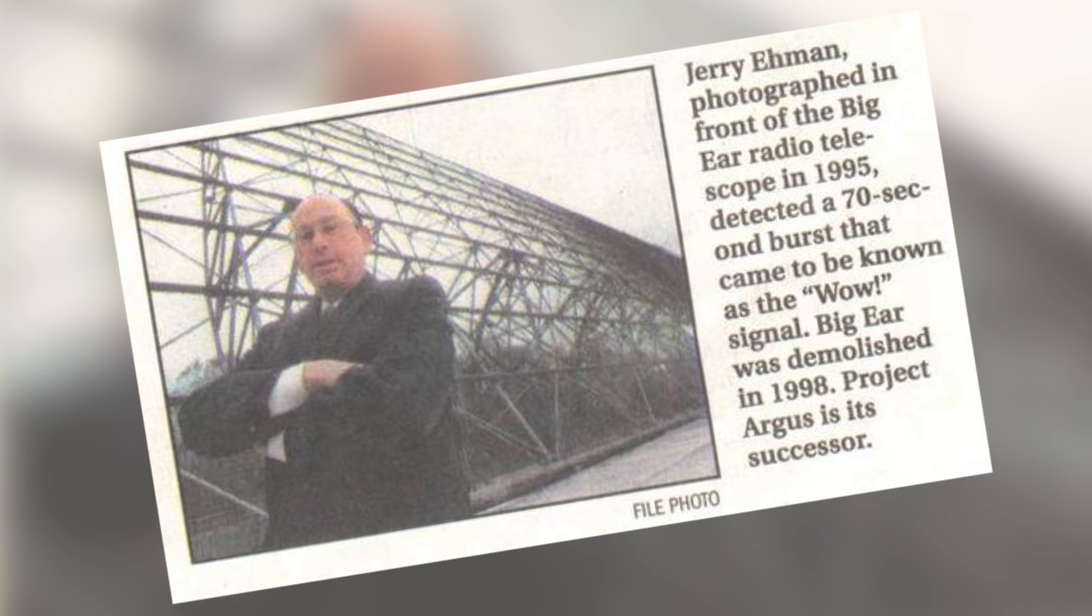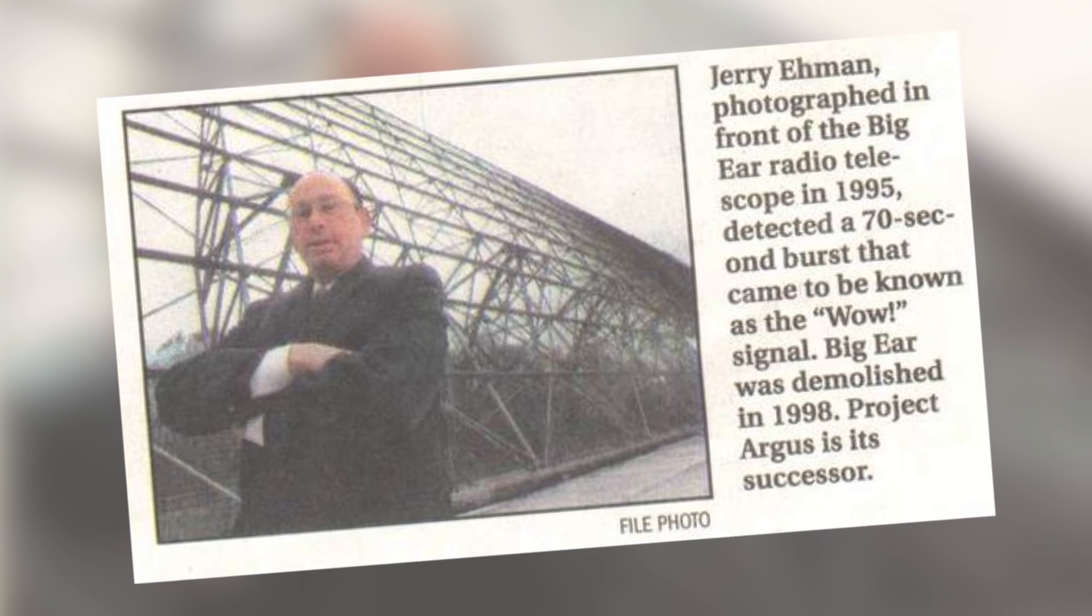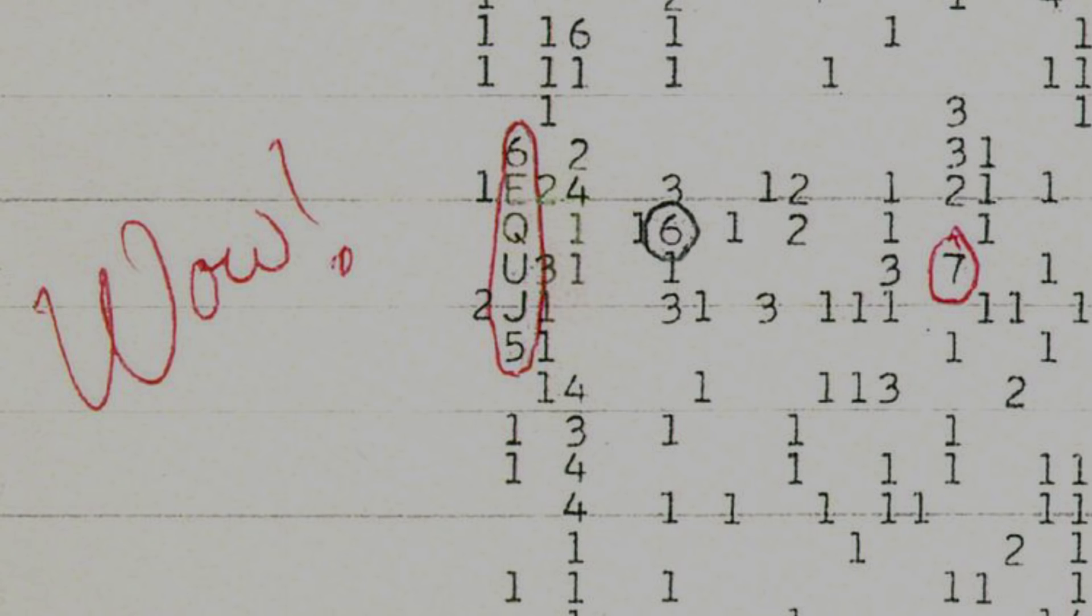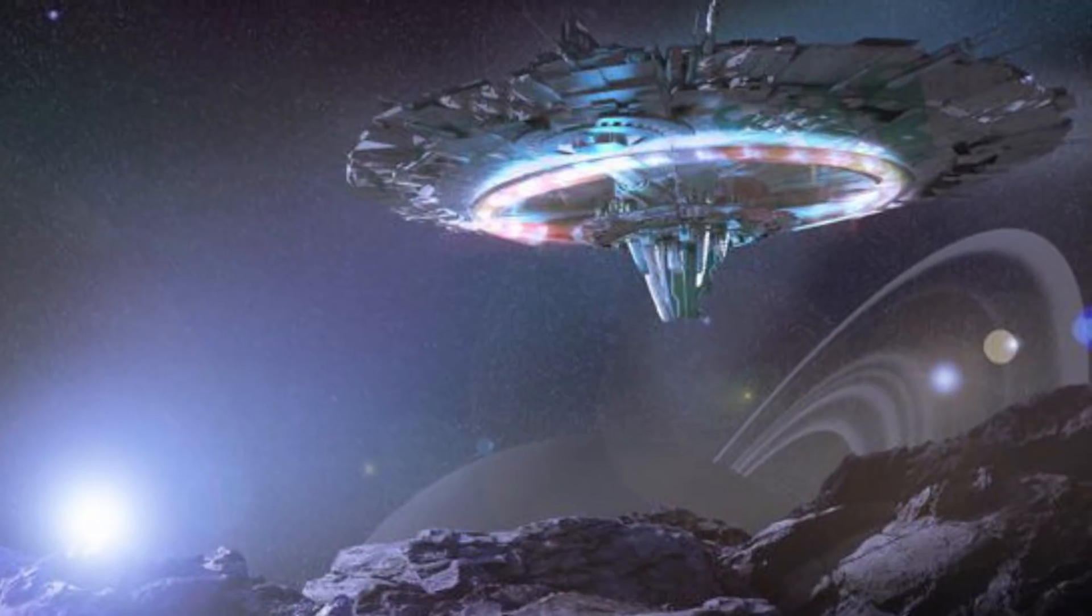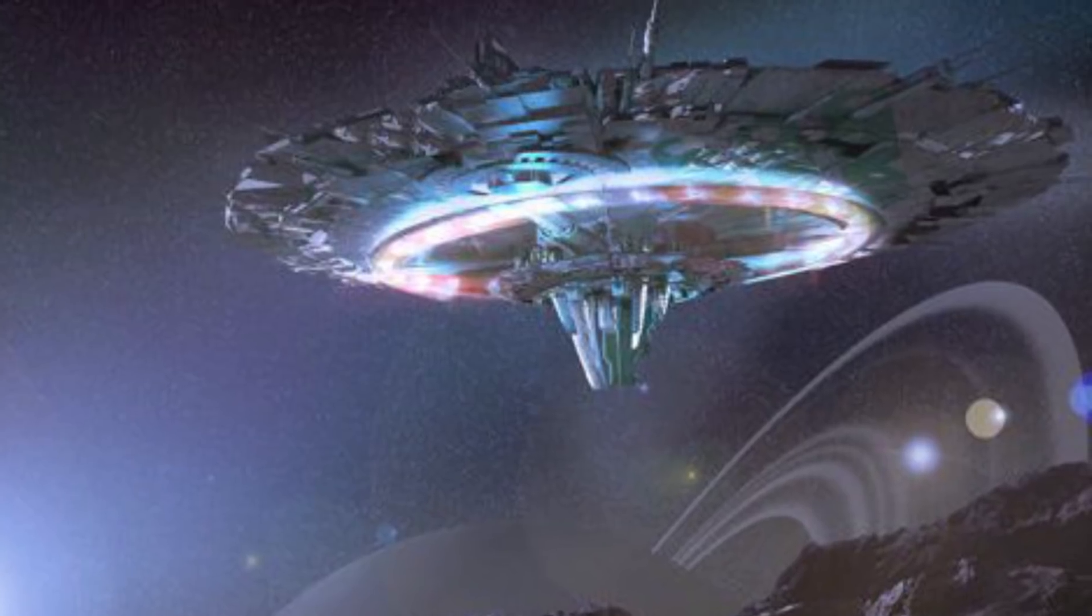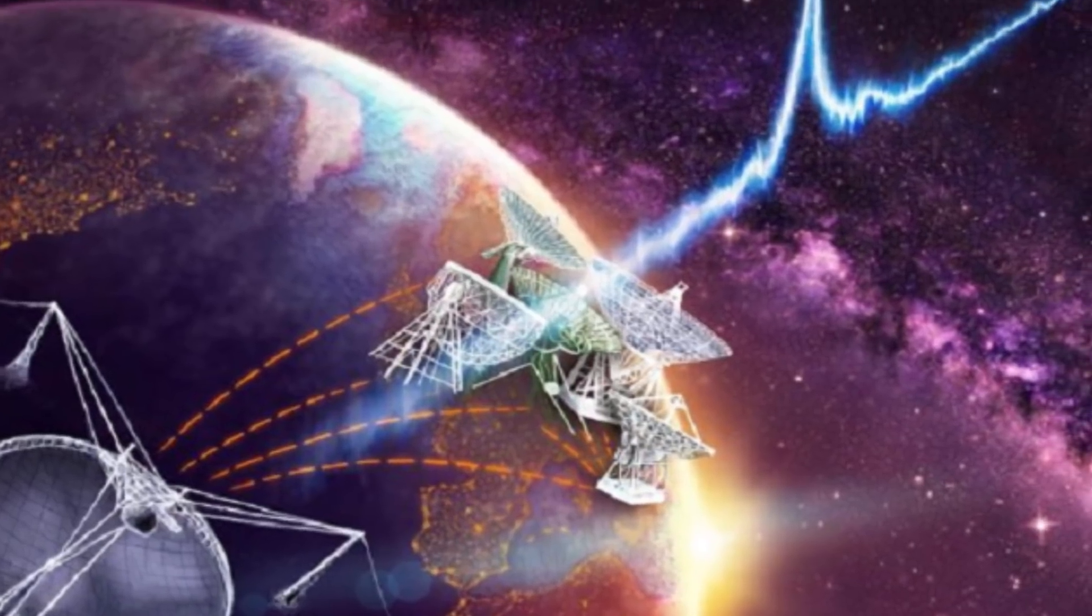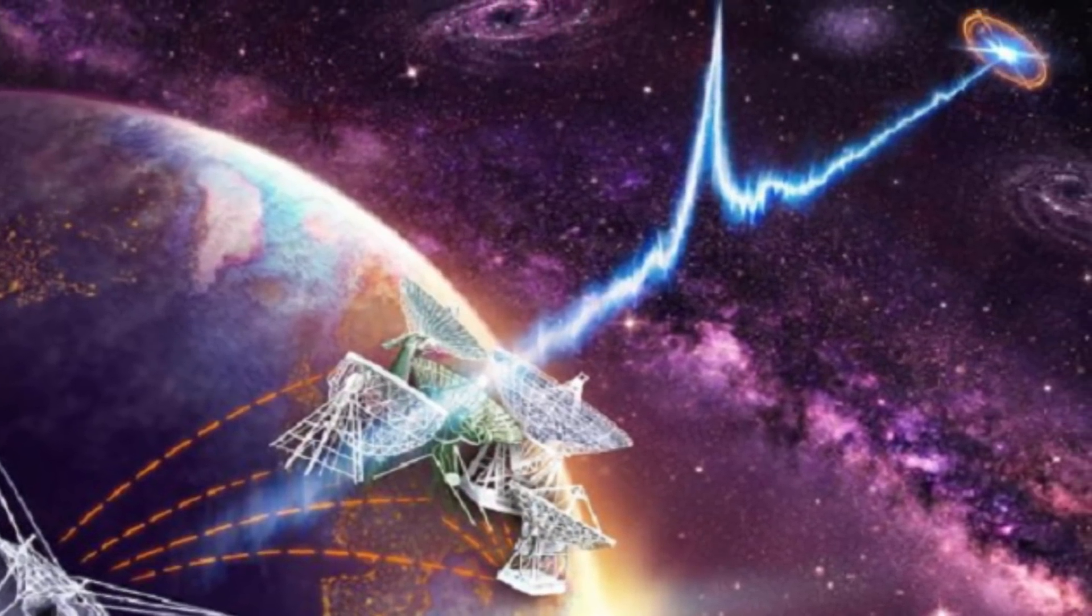Back in 1997, Jerry Amon detected what he thought could have been radio signals coming from an alien civilization. This signal, called the WOW signal after the notes written in Amon's findings, has for decades been used as evidence that there is other intelligent life out there. But was this actually sent by aliens, or was it caused by something else entirely? Let's explore.